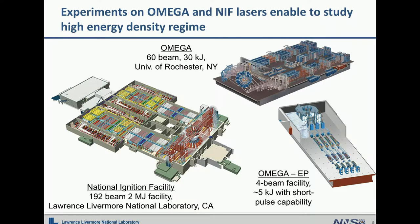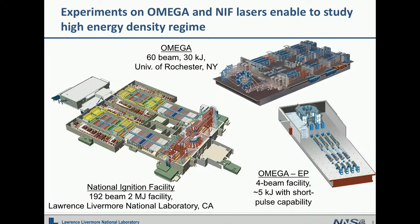We use the Omega and NIF lasers to do these high energy density experiments. The Omega laser is at the University of Rochester, New York, USA. It has 60 beams of laser converging into a spherical geometry, about 3 meters in diameter of the target chamber, with up to about 30 kilojoules of laser energy. Right next to it is Omega EP, which is a four-beam facility with the same 3-meter target chamber size and about 5 kilojoules of laser.